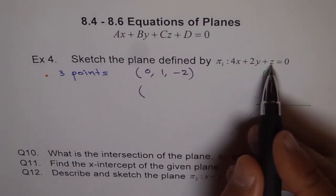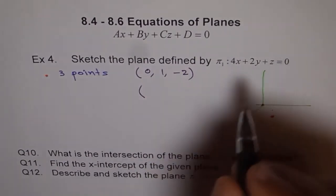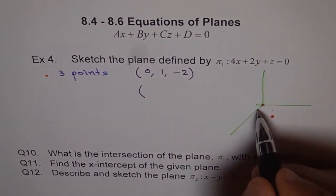So, if we put y as 0 and z as 1, so we get x as 1 over 4. Okay? Which kind of very close.